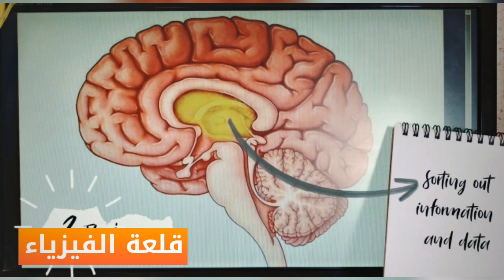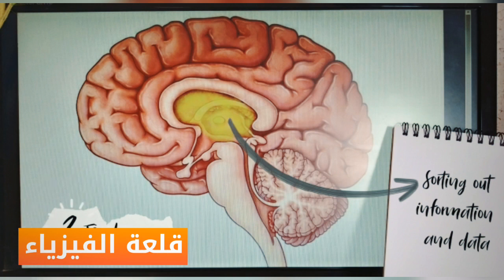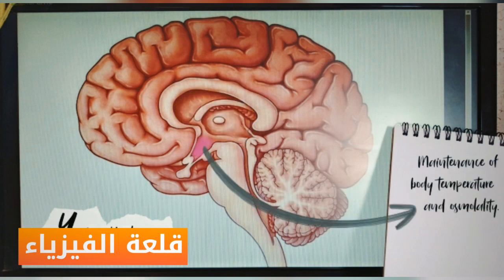Three, the thalamus. It sorts out information and data and sends it where it needs to go. Four, the hypothalamus. It maintains body temperature and osmality.